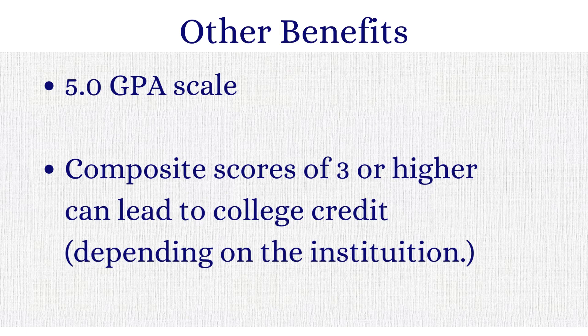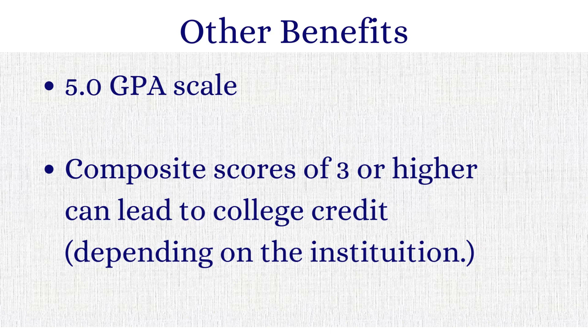Your composite score can potentially lead to college credit, depending on the college or university — many schools accept a three or higher. If you know which colleges you're considering, type in the school name plus 'AP scores' and search; you'll easily find what score you need for credit at that institution. Also talk to your school guidance counselors for more insight. To be clear, the college credit is not guaranteed, but even if you don't earn a score that leads to college credit, I firmly believe you will be a better writer and better thinker because of the class.